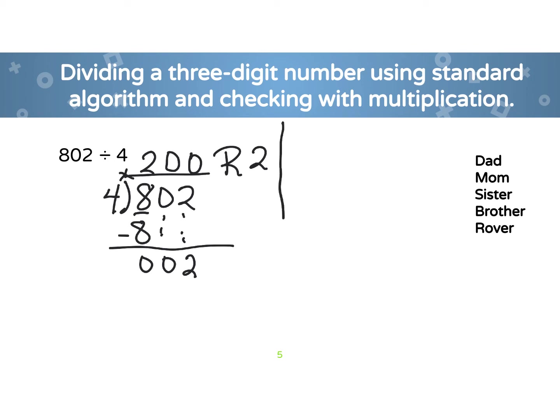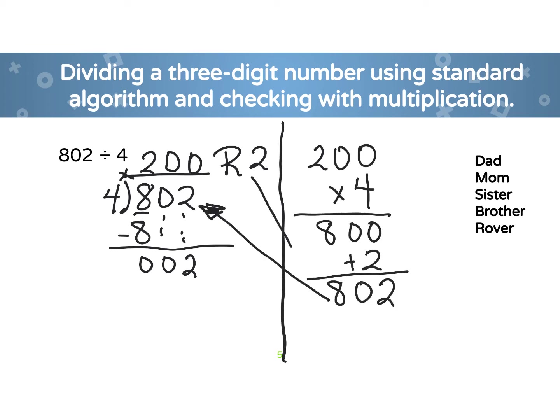We're going to use multiplying to check to see if our answer is correct. So when I multiply 200 times 4 and I add in my remainder, then I get 802, which is my dividend. So my answer is correct.